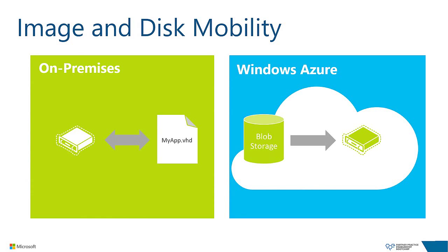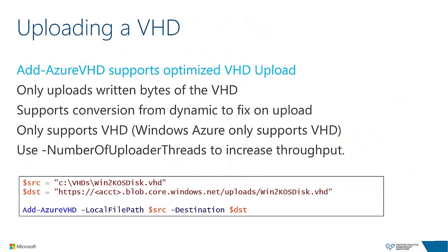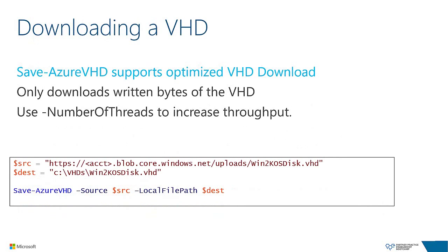Windows Azure supports uploading a disk to the cloud or downloading it back locally — these can be bootable OS disks, images, or data disks. The easiest way is with the Add-AzureVHD and Save-AzureVHD cmdlets. Add-AzureVHD uploads a VHD in an optimized pattern, only uploading written bytes, and supports converting dynamic to fixed VHDs on upload. It currently only supports the VHD format, though you can convert VHDX to VHD beforehand. You can optionally specify the number of upload threads to increase throughput. The source variable points to the local path; the destination variable points to your Azure storage account. Downloading is the same concept with paths reversed.